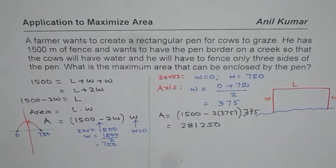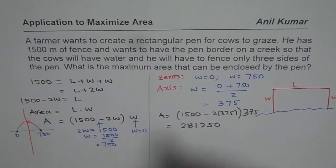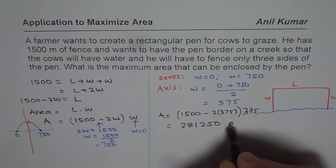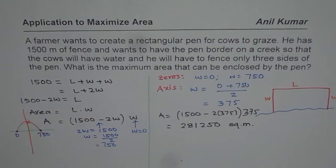Now, what are the units for this? Since the fencing is in meters, the units will be square meters. You get the point? So that is how we can find the maximum area.